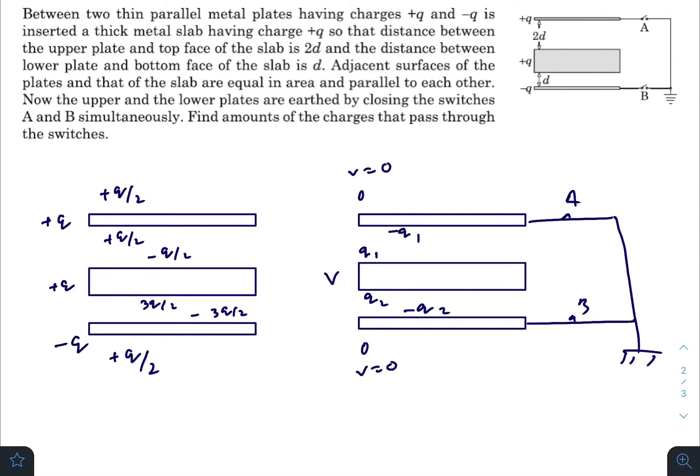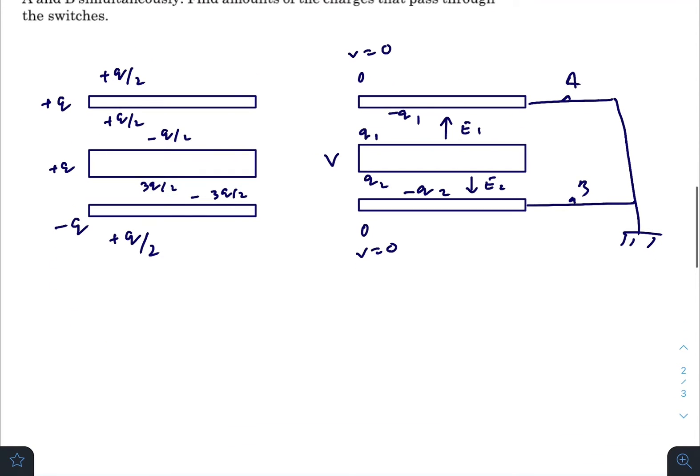Let the potential of this plate be v. Let in this direction the electric field be E1 and here the electric field is E2. The potential difference between these two plates and between these two plates is same. So that is E1 times 2d, as this one is 2d, and this one is d will be equal to E2 times d.